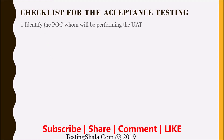First of all, we should identify the POC. The UAT will be done by the business team, the client, or other stakeholders. So the first key thing in your checklist is to identify who is the POC — who will be performing the user acceptance testing.